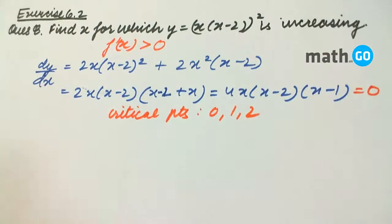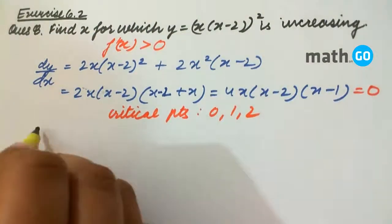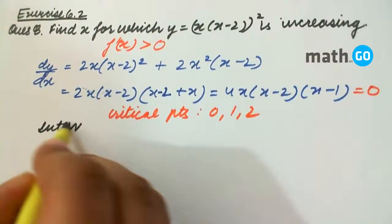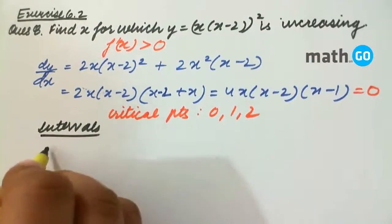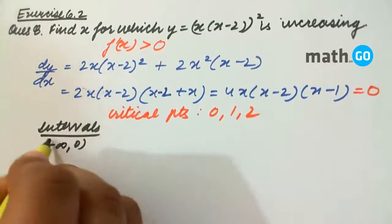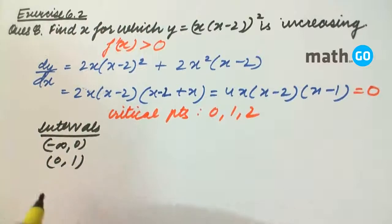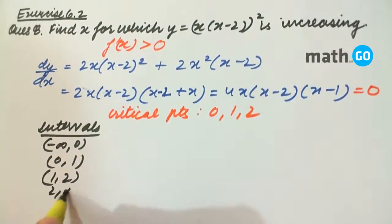So we define the intervals: minus infinity to 0, 0 to 1, 1 to 2, and 2 to infinity.